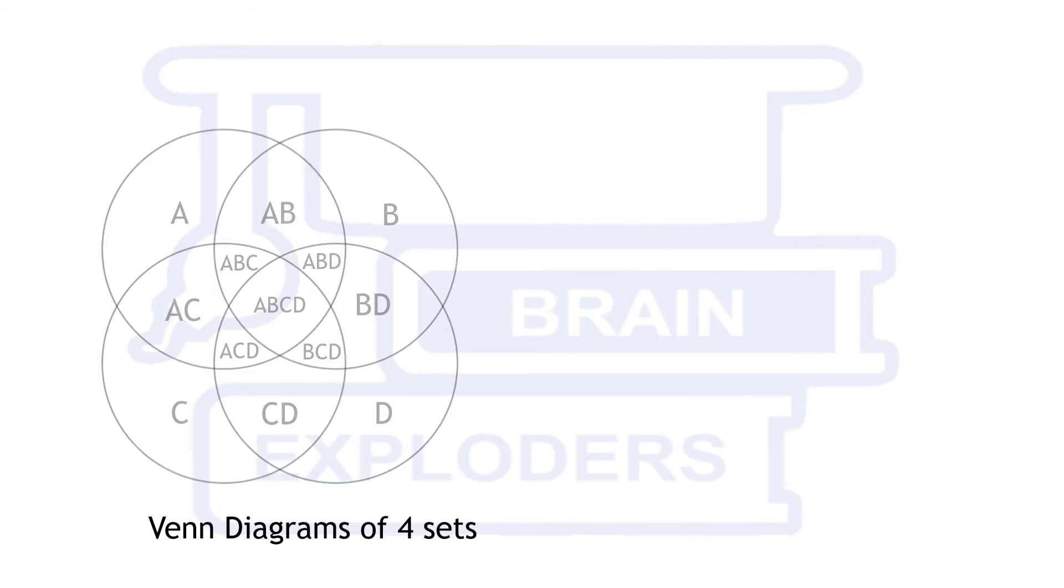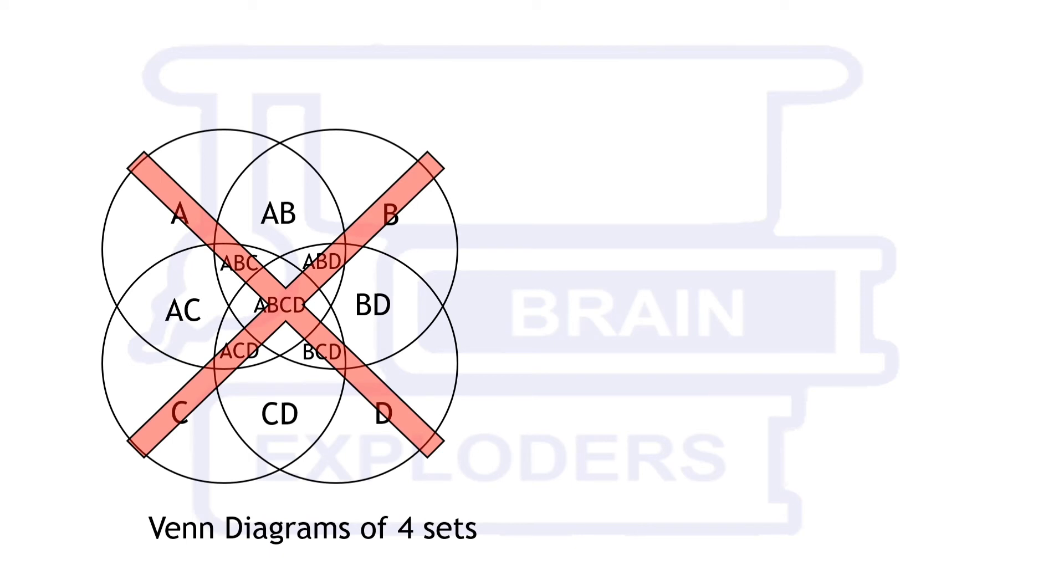Try to draw a Venn diagram of 4 sets. If this same diagram is drawn by you, then you are wrong. But why is it wrong? Everything is looking good enough. Actually, not everything.